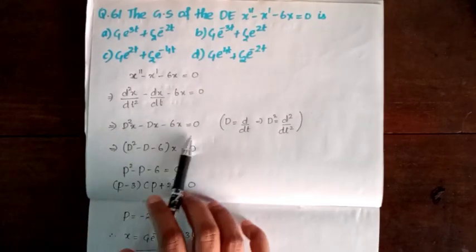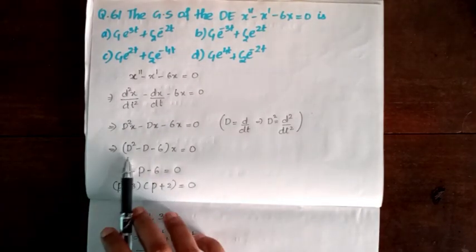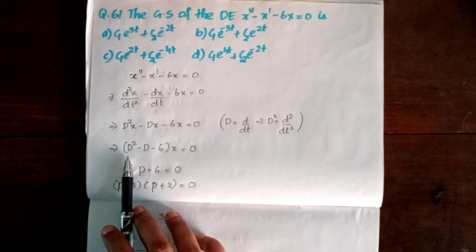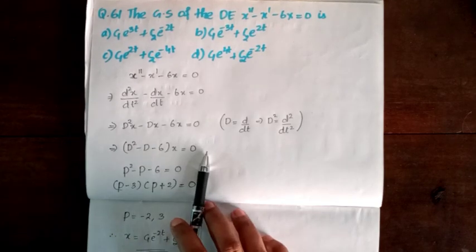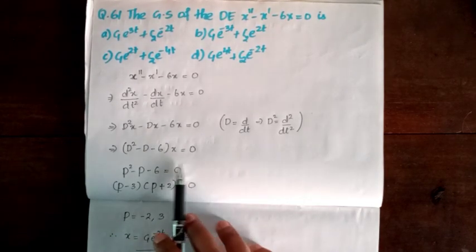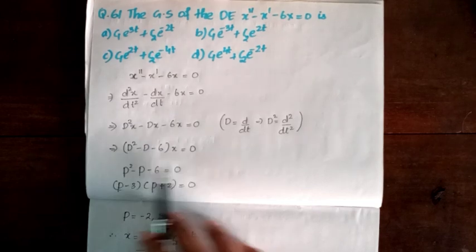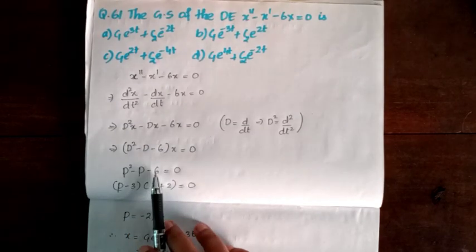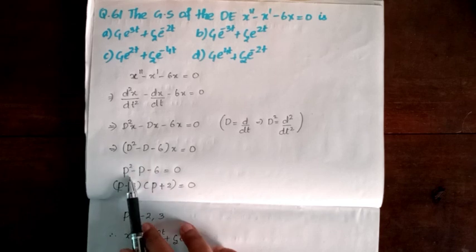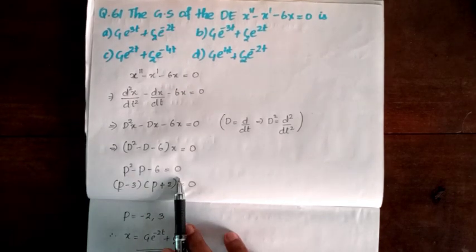So, (D² minus D minus 6)x equal to 0. This is the characteristic equation. Writing in terms of p: p² minus p minus 6 equal to 0.